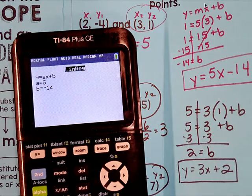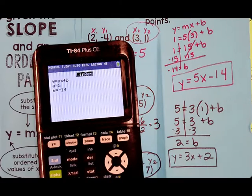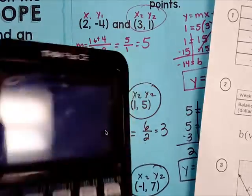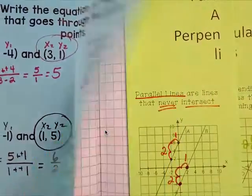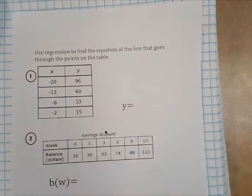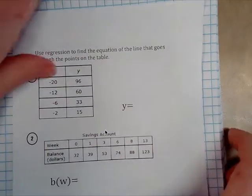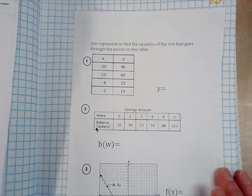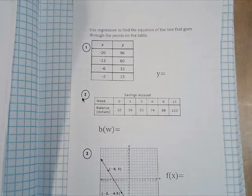Hopefully you're getting the hang of this. Let me hand out some sample problems. Okay. So we've done some examples. So let's look at the three problems I'm giving y'all to do. I want you to go ahead and use regression to find the equation of a line that goes through the points on the table. So let's take a few.